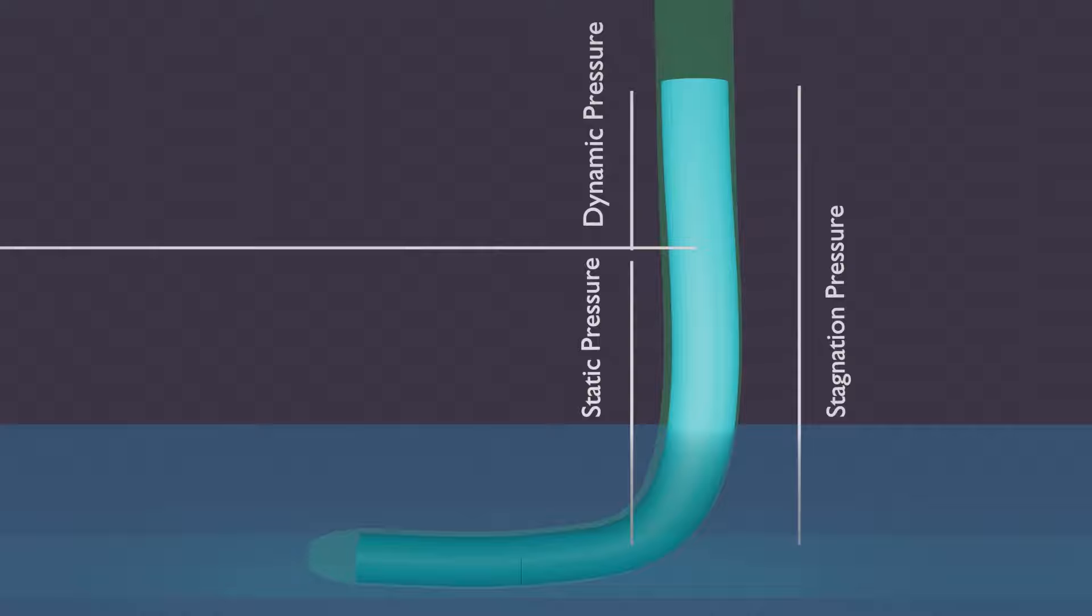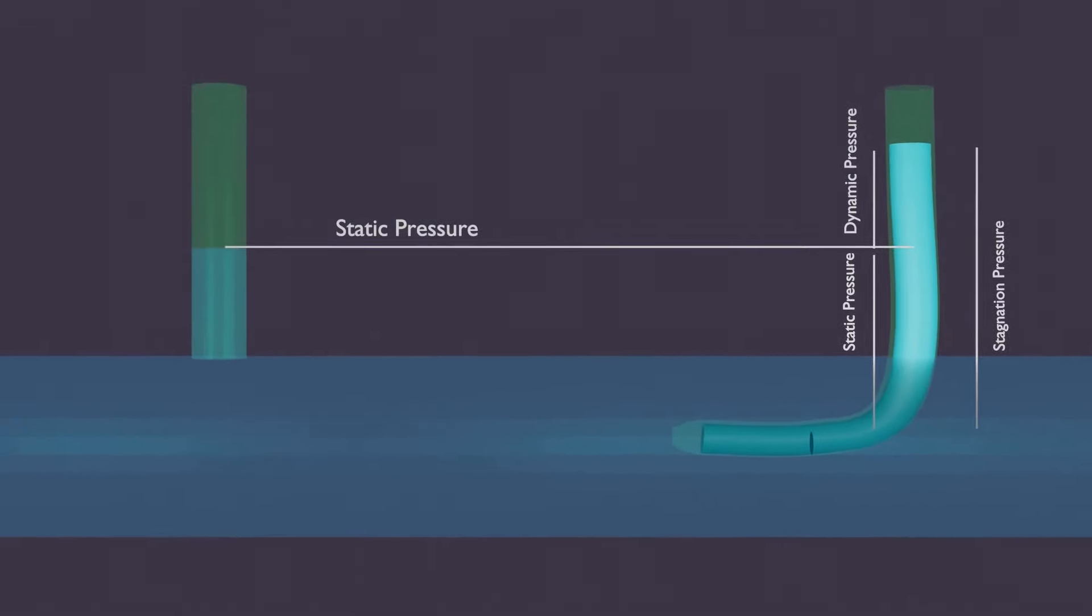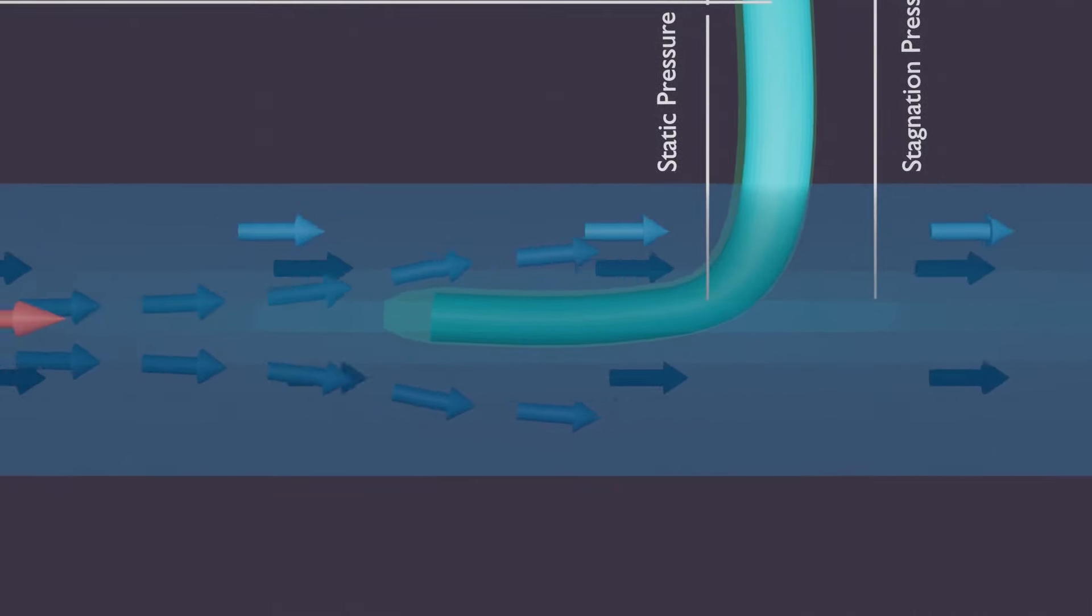And stagnation pressure is the total sum of static and dynamic pressure. So the stagnation pressure represents the pressure at a point where the fluid is brought to a complete stop.